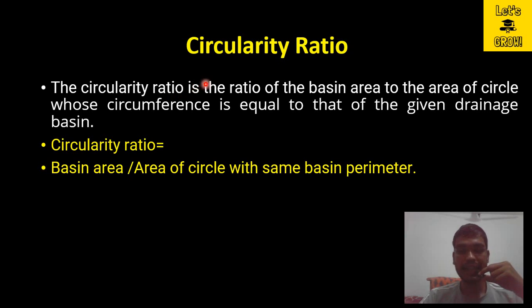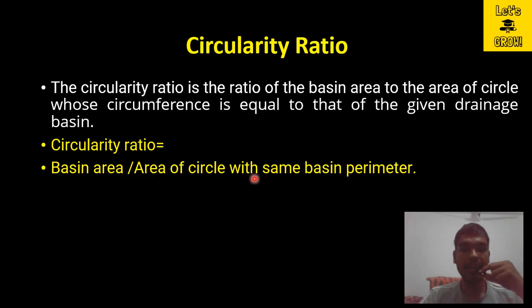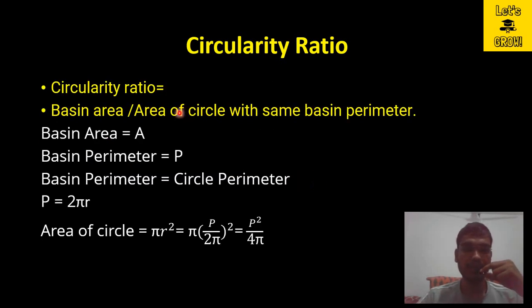Now we look at the second term: circularity ratio. The circularity ratio is the ratio of the basin area to the area of a circle whose circumference is equal to that of the given drainage basin. Mathematically, circularity ratio equals basin area divided by the area of a circle with the same basin perimeter.